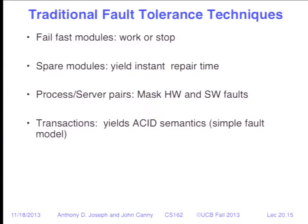Some traditional fault tolerance techniques: fail-fast modules that either work or stop; having spares for quick recovery — enterprise arrays have extra drive bays with standby drives that immediately start rebuilding if an active drive fails, minimizing the window for a double-drive failure; process and server pairs as a way of masking hardware and software faults; and transactions, which give nice ACID semantics — if something goes wrong, just abort. If it's a Heisen bug, that will fix it. If it's a Bohr bug, you'll have repeated aborts and need external intervention.